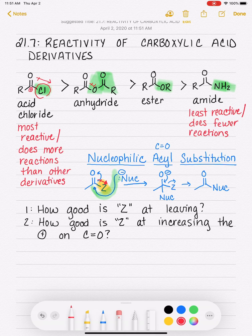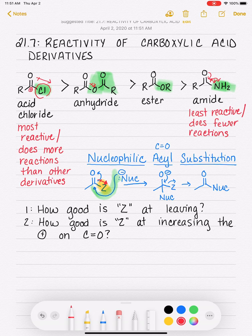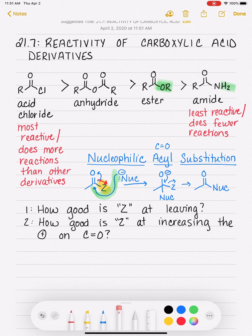Oxygen is not quite as electronegative. And as we get to the other substituents, they actually decrease the reactivity of the carbonyl group by stabilizing it through resonance. With all of those factors in mind, we can understand the reactivity of all of our derivatives.